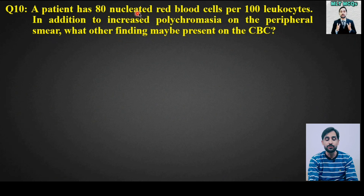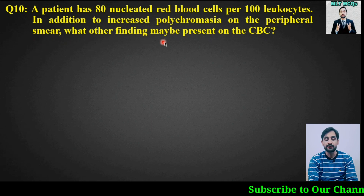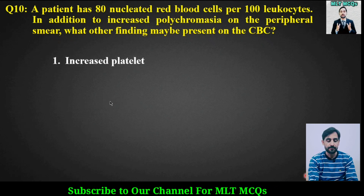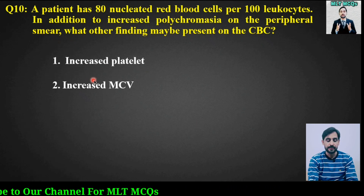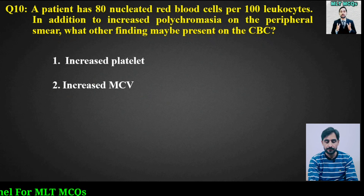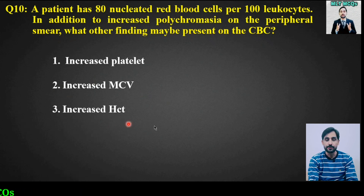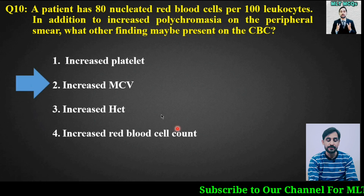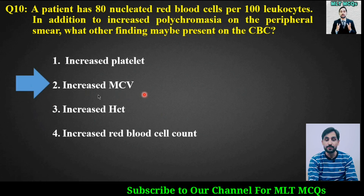MCQ number 10: A patient has 80 nucleated red blood cells per 100 leukocytes. In addition to increased polychromasia on the peripheral smear, what other findings may be present on the CBC? Options are increased platelets, increased MCV, increased hematocrit, or increased red blood cell count. The right answer is option number 2: the MCV will be increased.